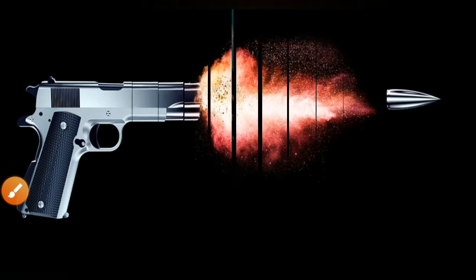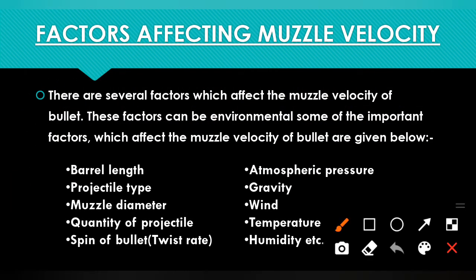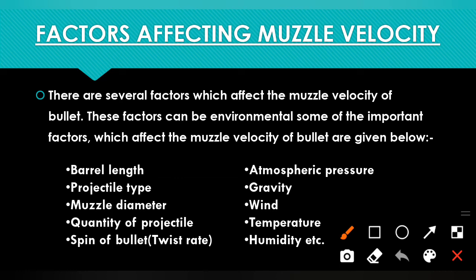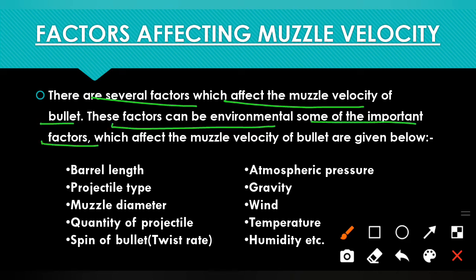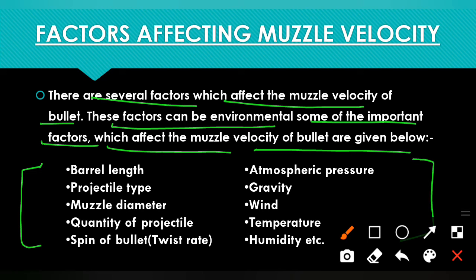Now let's move ahead and look at which factors affect muzzle velocity. There are several factors which affect the muzzle velocity of a bullet. These factors can be environmental. Let's look at the important ones. First, the barrel length of the firearm also causes an effect on muzzle velocity.